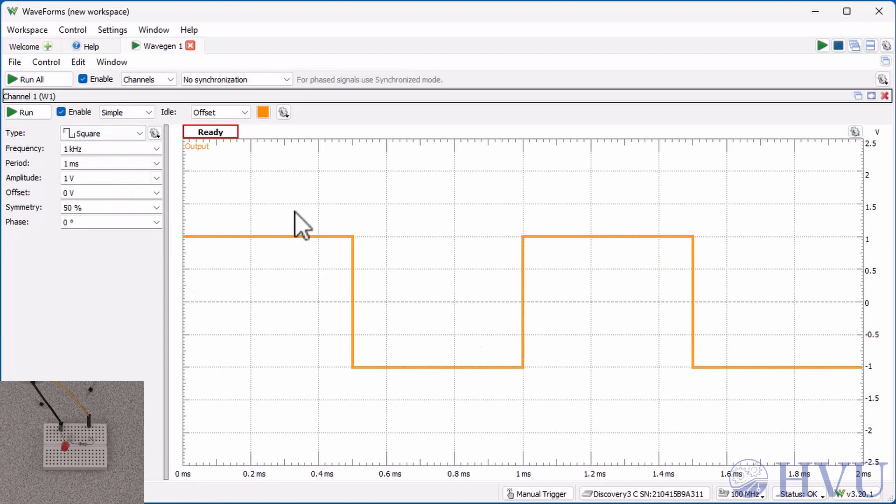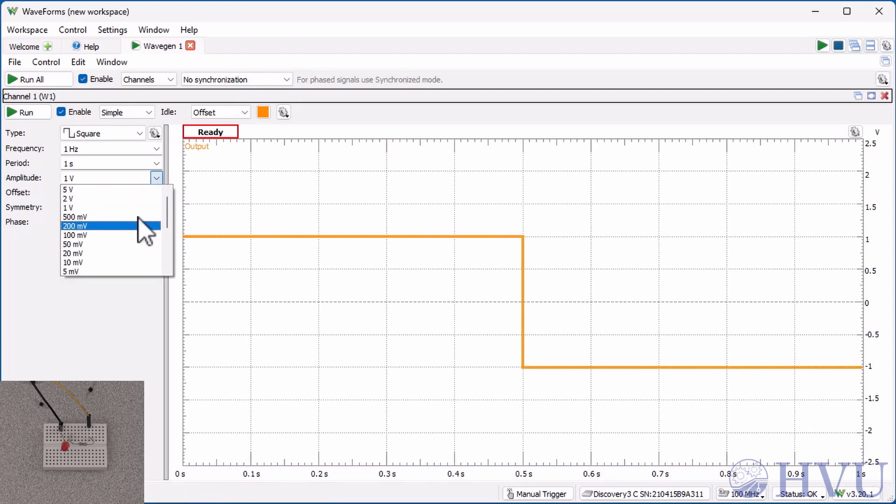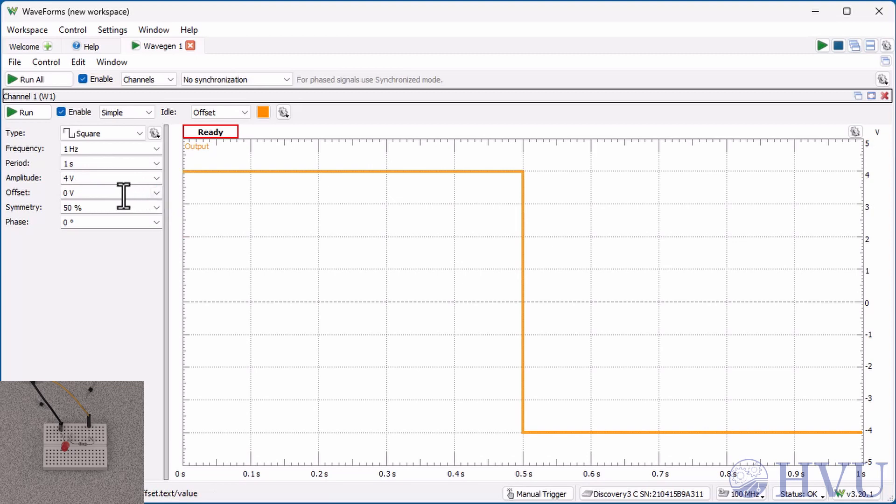To get a frequency of 1 Hertz, set the frequency to 1 Hertz, I'll use the drop-down menu, and the amplitude to 4 volts. 4 volts isn't on the drop-down menu, so I can just type the value I want and press enter. We'll leave the offset at 0 volts so that the signal alternates between positive 4 volts and negative 4 volts.